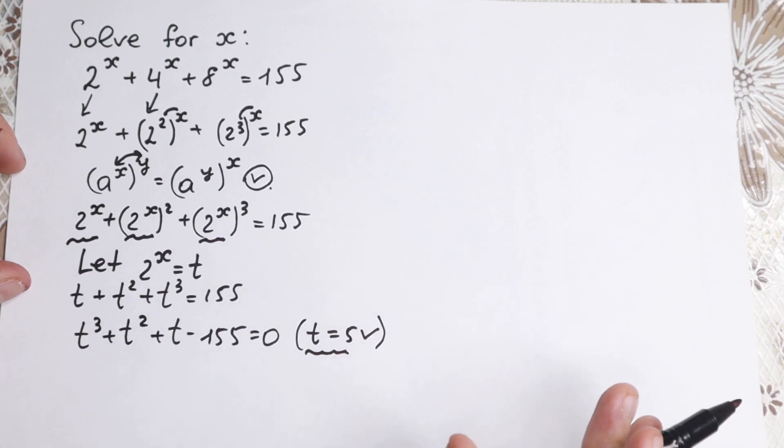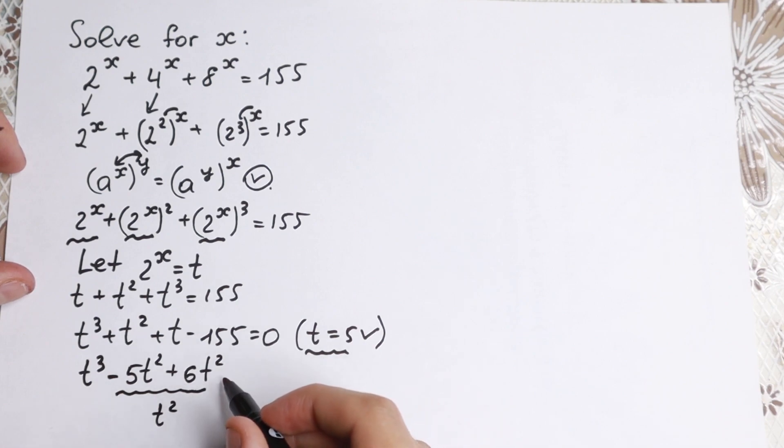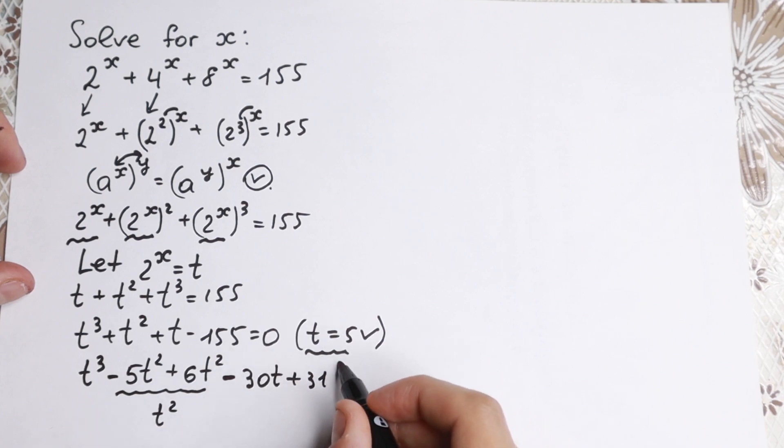But we need to find another solution, maybe we'll have more roots right here. So let's try to factor this t minus 5. Take a look closely what I will do right now. We have t cubed at first in the beginning, and right now we have t squared. But how can we express this t squared? We can easily write it right here: minus 5t squared and plus 6t squared. This is equal to t squared, so nothing changed for us. We have t but we need to factor t minus 5. We can easily write the next step instead of t: minus 30t and plus 31t, and the last minus 155 without any changes.